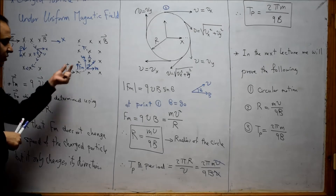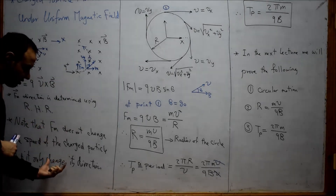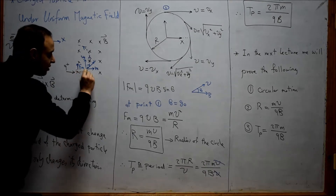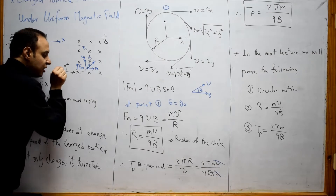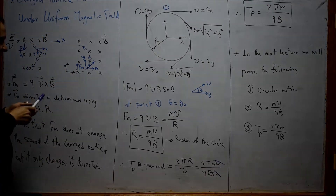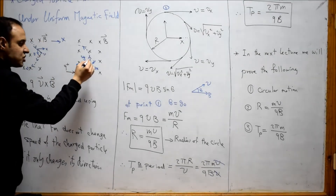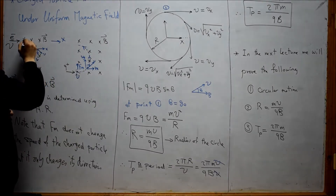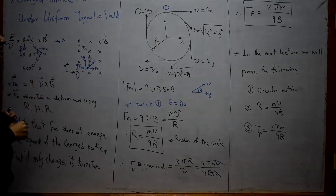Another property of the magnetic force is that it does not change the speed of the particle. At any point, the speed is constant — the same speed with which this particle entered the region of the magnetic field. So if at the starting point the velocity was v, at any point along the path the velocity will continue with the same magnitude v. The same applies to the electron.